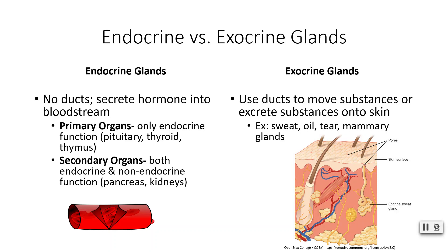Exocrine glands are a bit different — they do use ducts. They're going to use those ducts to move or excrete substances directly onto the skin. You are familiar with these: these are your sweat glands, your oil glands, tear glands, and your mammary glands.